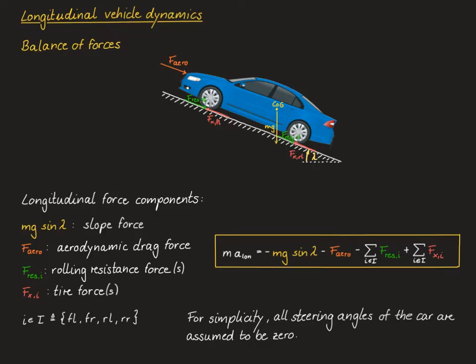Given all these longitudinal force components, by the center of gravity principle, we get that the mass times the longitudinal acceleration of the vehicle is equal to the sum of all these forces. We have to take into account that some of these forces may be acting against the direction of travel and hence enter with a minus sign, while some forces enter the equation with a plus sign. Next, we'll go through the list of all these forces and look at them in a little more detail.